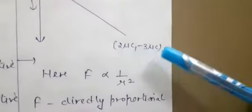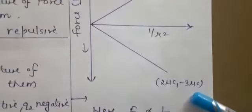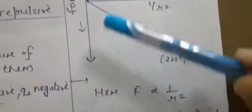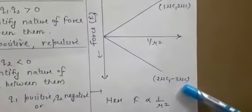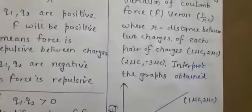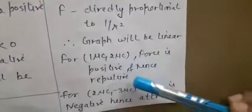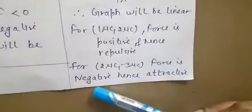For pair two — 2 µC and −3 µC — these are of opposite polarity, so force will be negative. The graph is linear but lies in the negative axis. Negative force indicates an attractive force. Interpretation: for 1 µC and 2 µC, force is positive and hence repulsive; whereas for 2 µC and −3 µC, force is negative and hence attractive.